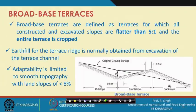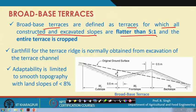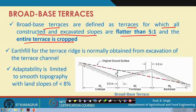Broad-based terraces are defined as terraces for which all constructed and excavated slopes are flatter than 5:1 and the entire terrace is cropped. Terracing always involves cut and fill — soil is cut from one portion and filled in another to reduce the total slope. For example, cutting soil from one area and filling it elsewhere brings the land slope down so that the entire area can be cultivated.